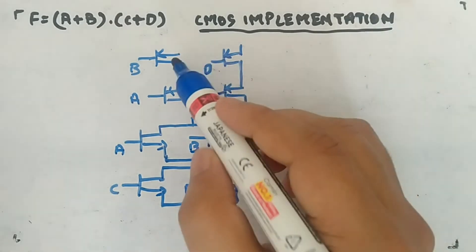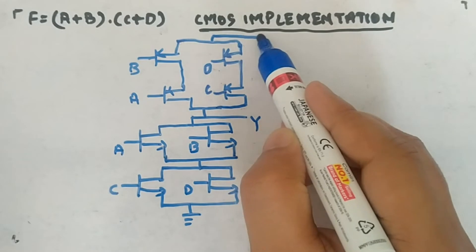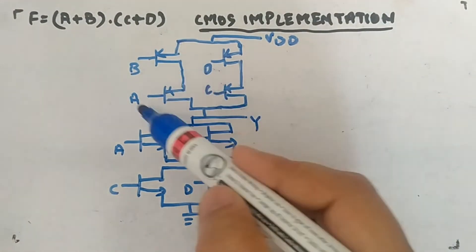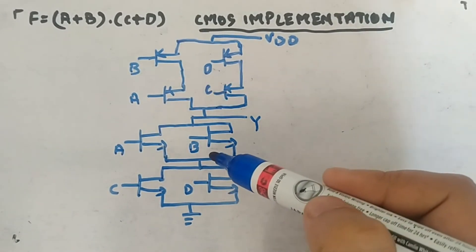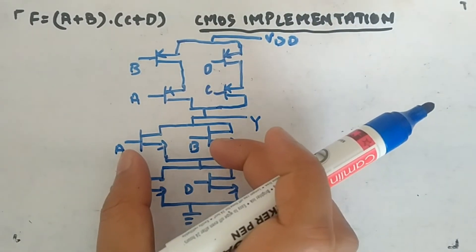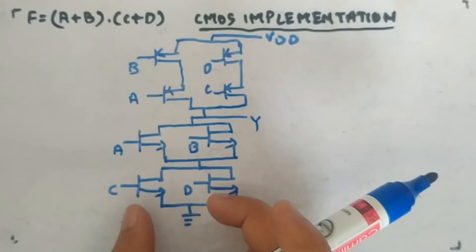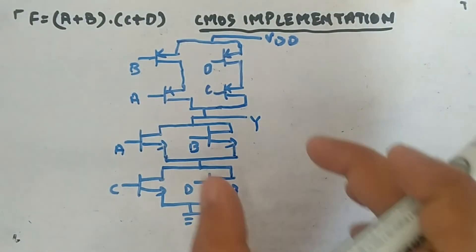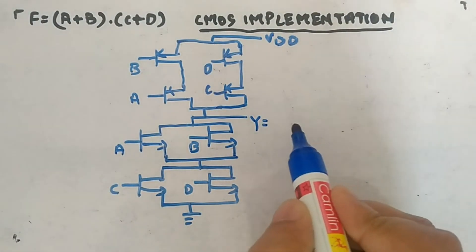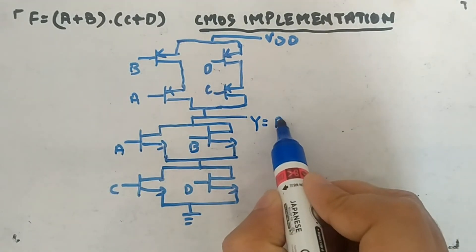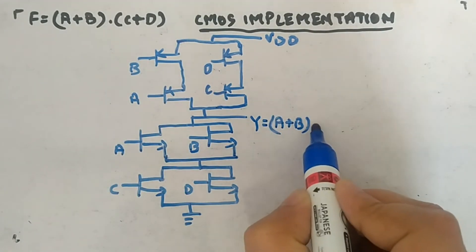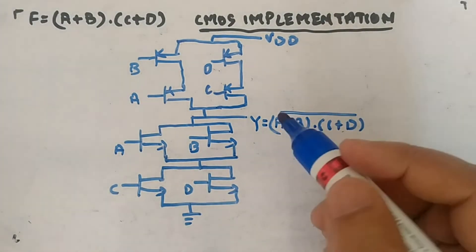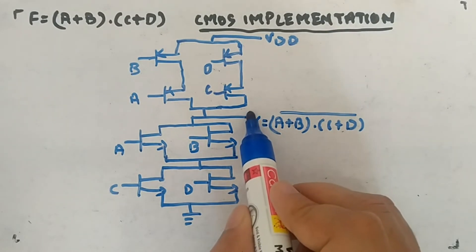c and d are connected like this, and this whole thing is connected to VDD. So I have taken the two guys that were parallel and made them series, and the two groups that were in series are now made parallel — the whole set becomes parallel. So at y you are getting (a + b)·(c + d) bar. You need a CMOS inverter to get your f function.